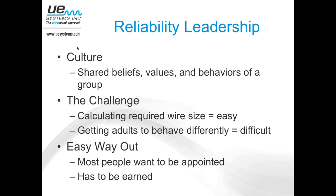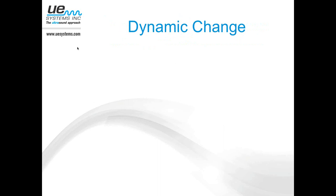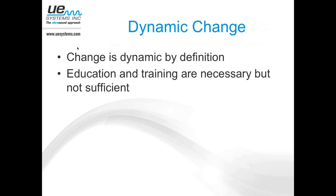The second keynote is titled 'General Motors' Predictive Maintenance Transition Through Downsizing and Bankruptcy.' General Motors, at one time the largest corporation in the world, has been in the predictive maintenance realm for quite some time, and their journey has been somewhat tumultuous — up, down, up, down. Dave Ryber is going to give a history of those ups and downs and where they are as they're growing predictive sciences again at GM. This got me thinking about dynamic change — change by its definition is dynamic.